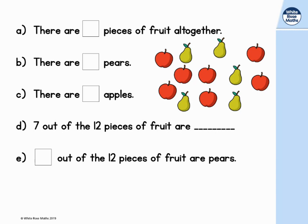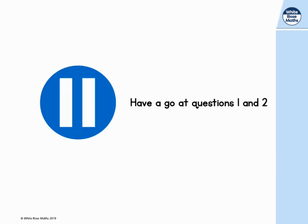Let's have a look at the next one. There are pieces of fruit altogether. We can see altogether there are twelve pieces of fruit, and there are five pears. There are also seven apples. Seven out of the twelve pieces of fruit are, that's right, apples. And five out of the pieces of fruit are pears. Have a go at questions one and two.